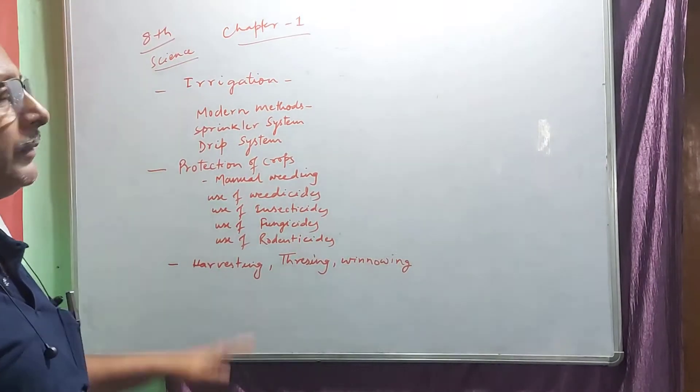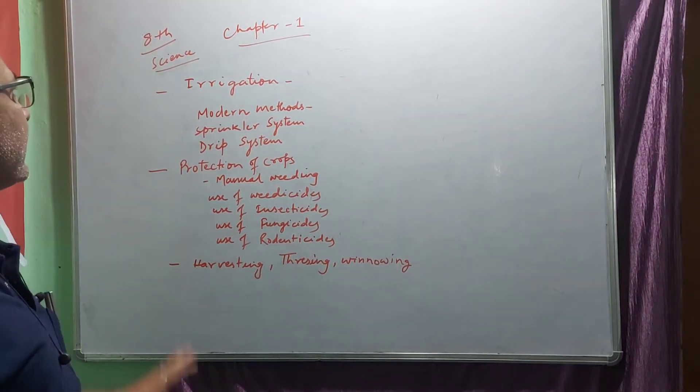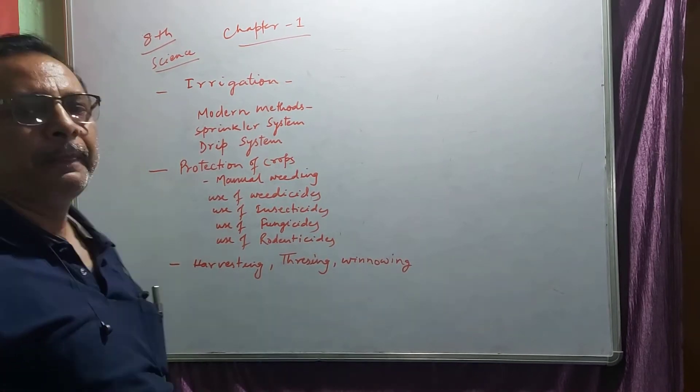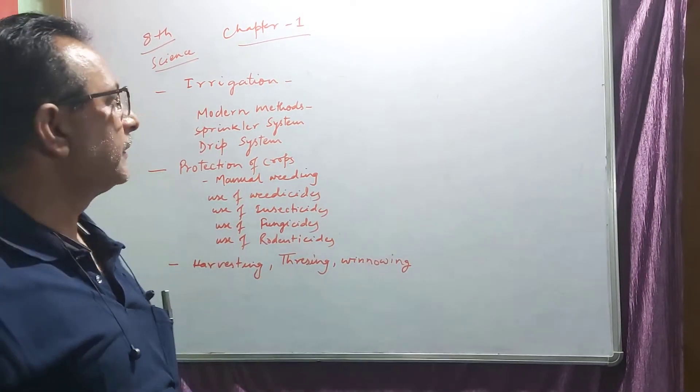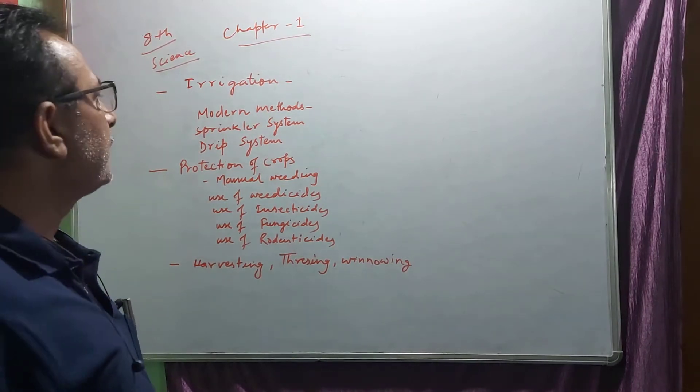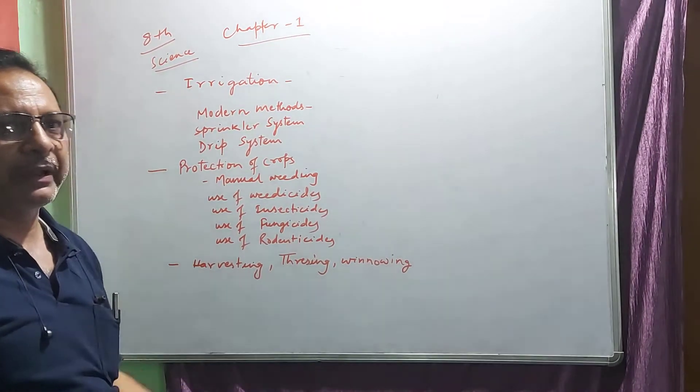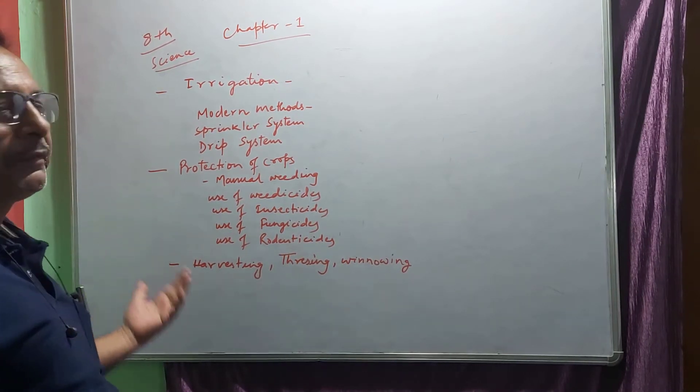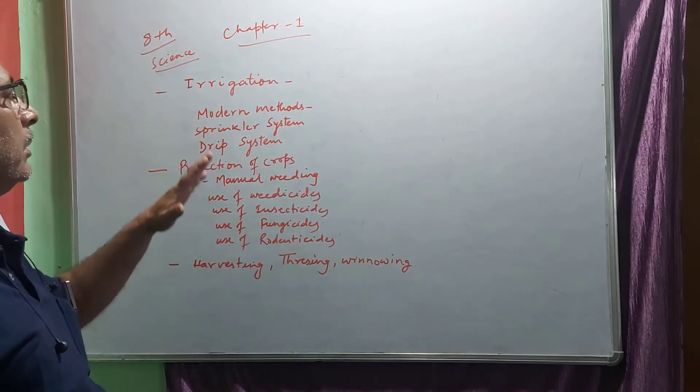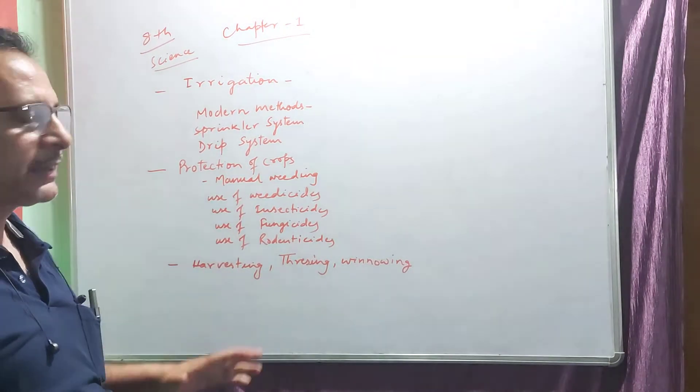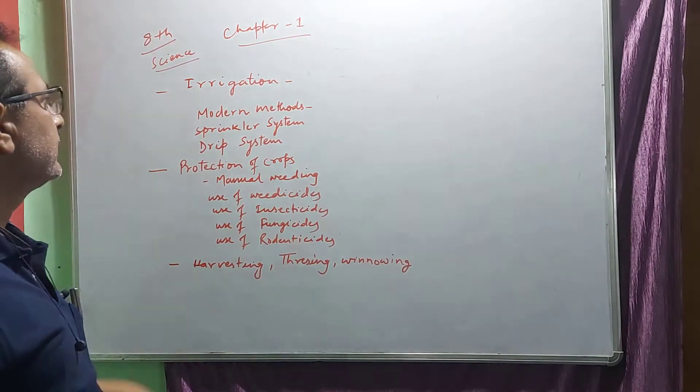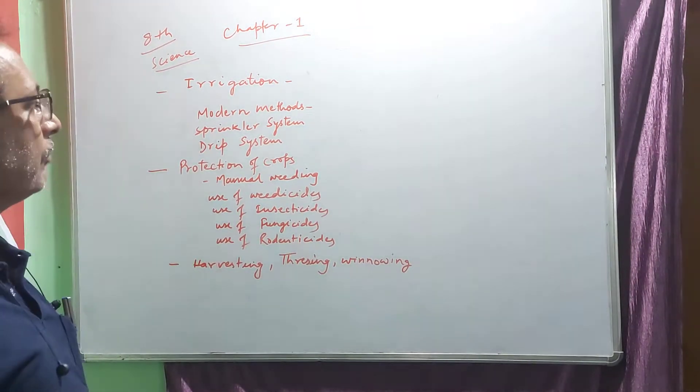This is the class of science for class 8 and the chapter is 1, that is agriculture. In previous classes we have already discussed about the process of agriculture and the process of sowing and use of manure and fertilizers. Now in agricultural practices the next process or the next practice is irrigation. What is irrigation?